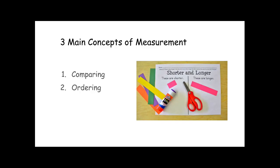And then when you compare you can also order. Let's line up from tallest to shortest, or from oldest to youngest, or different ways of ordering objects. Let's put the biggest one first and then have the smallest one be last, or the smallest one first to the biggest one.